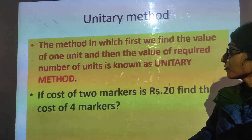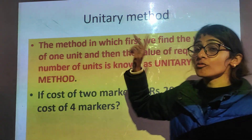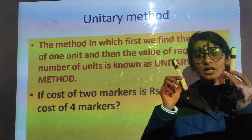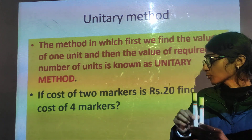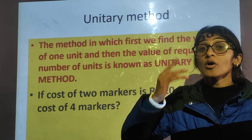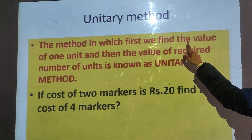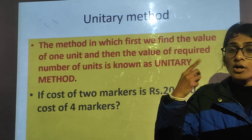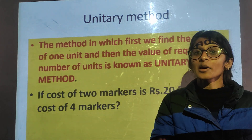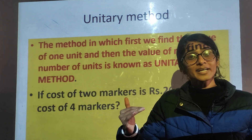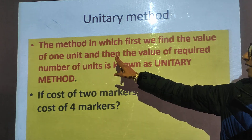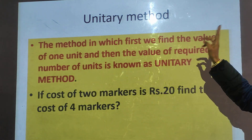In this method, first of all we find the value of 1 unit. Here they have told you the value of 2 units — the cost of 2 markers is Rs. 20. So step 1: you have to find the cost of 1 marker, meaning the value of 1 unit. If the cost of 2 markers is Rs. 20, the cost of 1 marker is 20 divided by 2, that is Rs. 10.